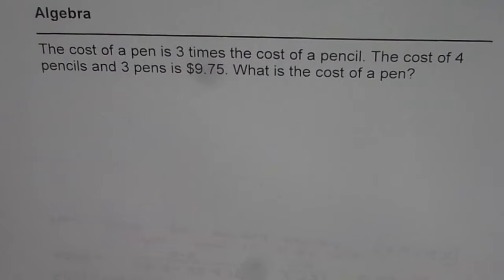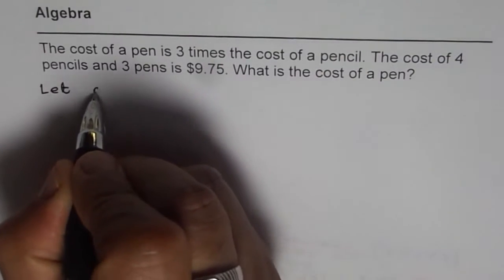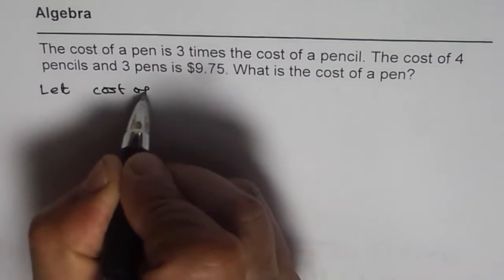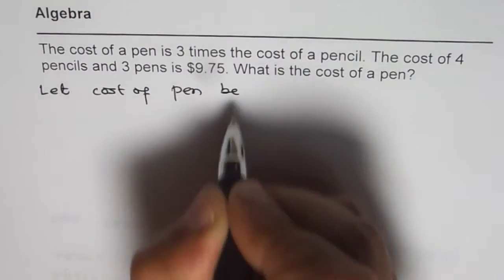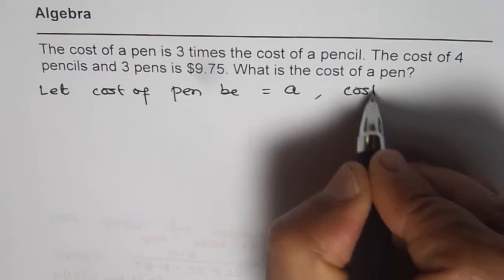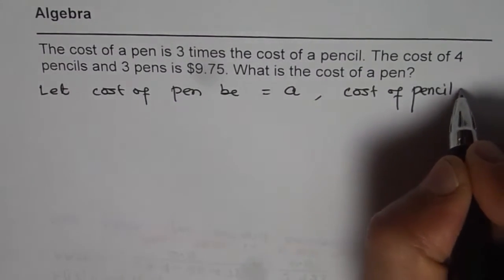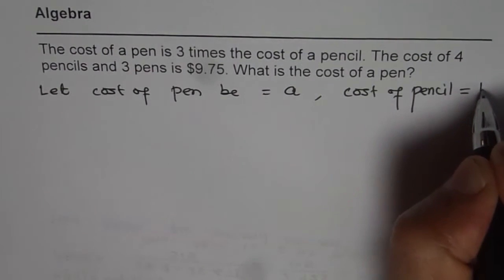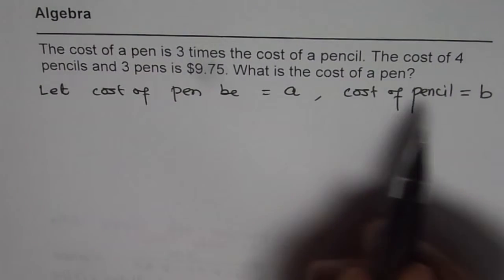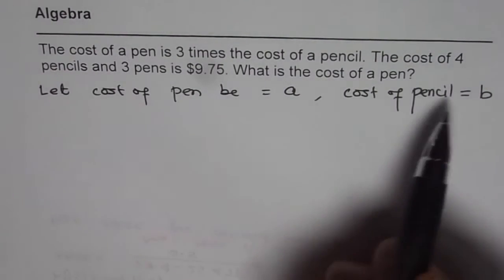So in such a question we have to write equations. To write equations we have to define variables. So let us say that cost of pen be A and cost of pencil be B. So A and B are two variables. They represent cost of pen and that of pencil.